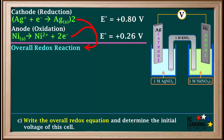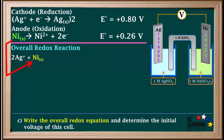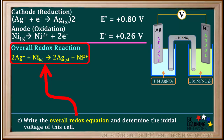We can now add these two half reactions to obtain the equation for the overall redox reaction. On the left side we have two Ag⁺ ions and one nickel atom; on the right side we have two silver atoms and one Ni²⁺ ion. The electrons cancel out since the number gained equals the number lost. This is the balanced equation for the overall redox reaction, and if you check, you'll see that atoms and charges are balanced.